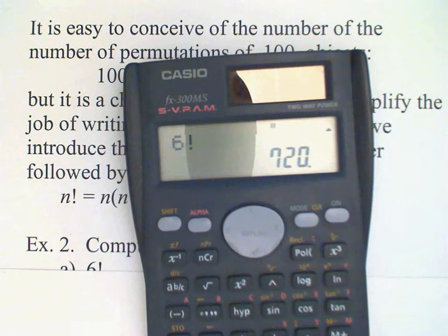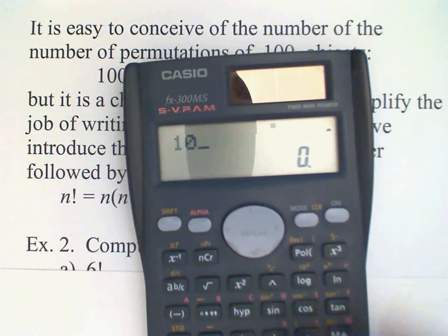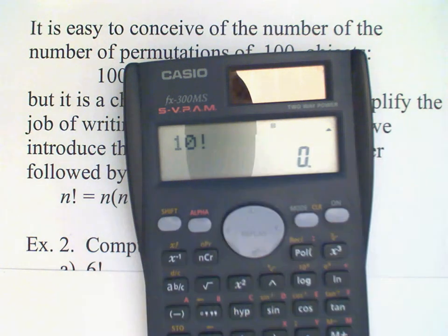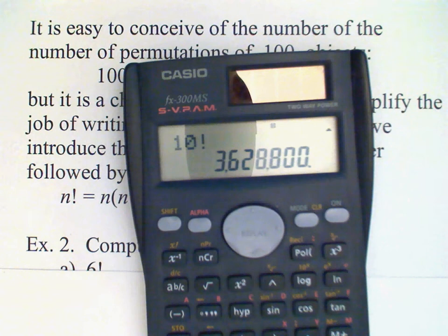Let's just do one more example, 10 factorial. There it is, 3,628,800.